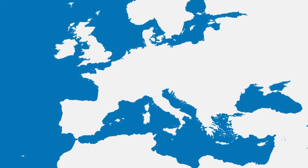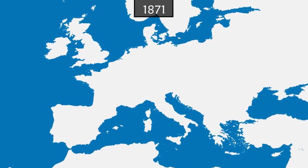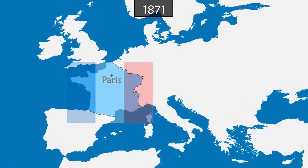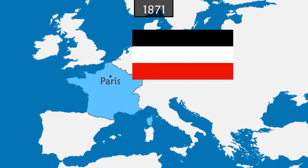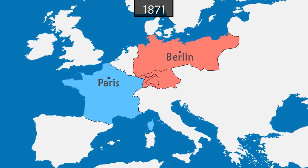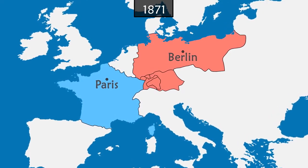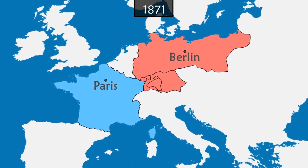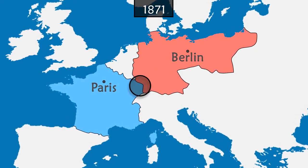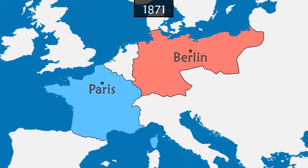To understand the origins of World War I, we start in 1871 at the end of the Franco-German War between the French Empire and the Confederation of North Germany, allied with the German states of the south. After six months of fighting, France is defeated and the victors unite to form the German Empire. Alsace and Moselle are annexed to the new empire, frustrating the French side.